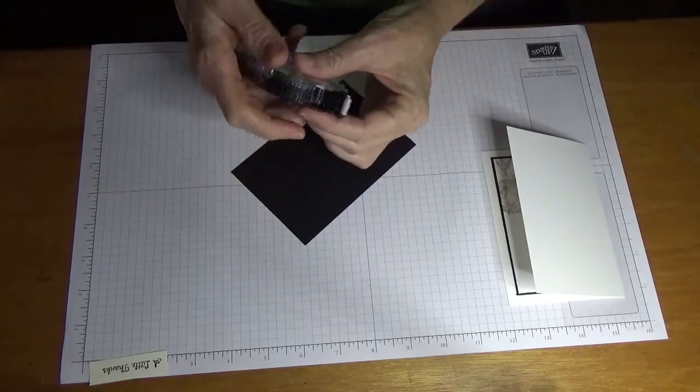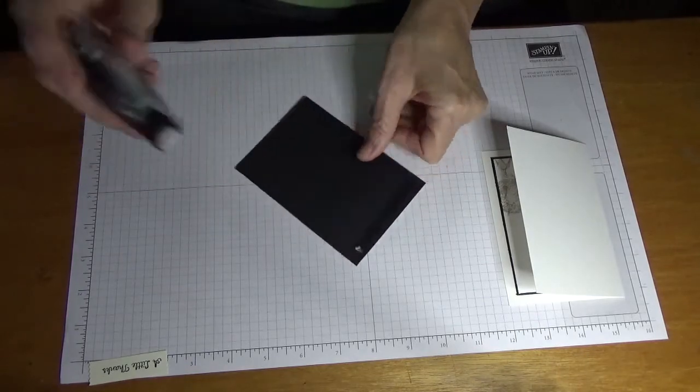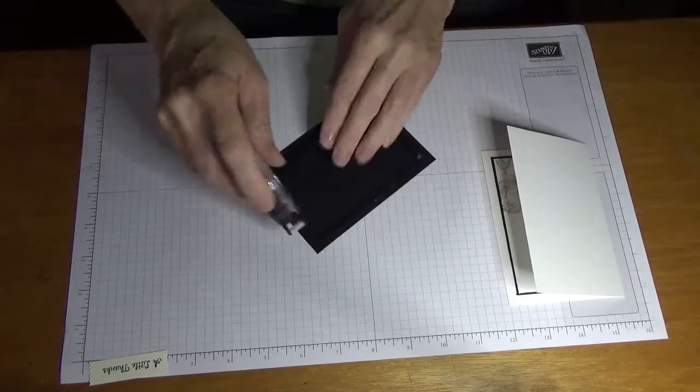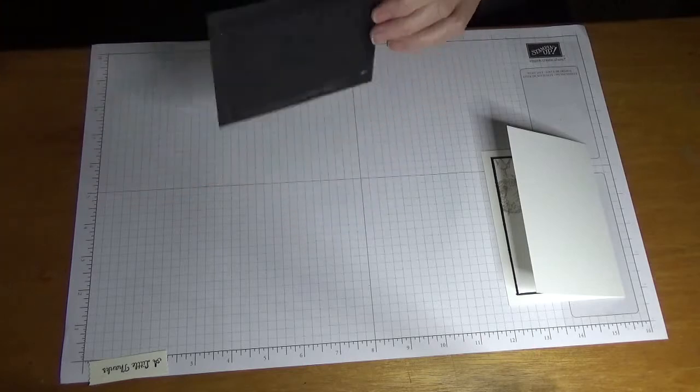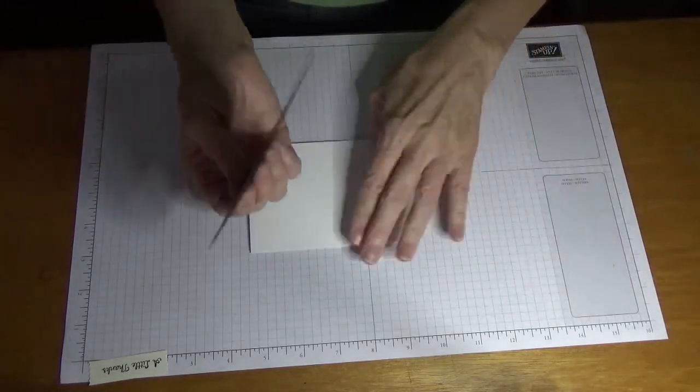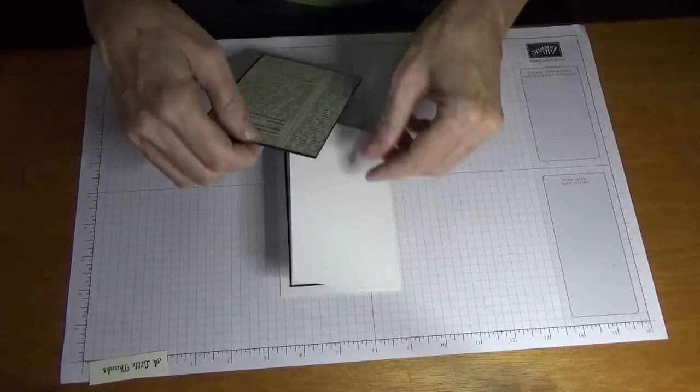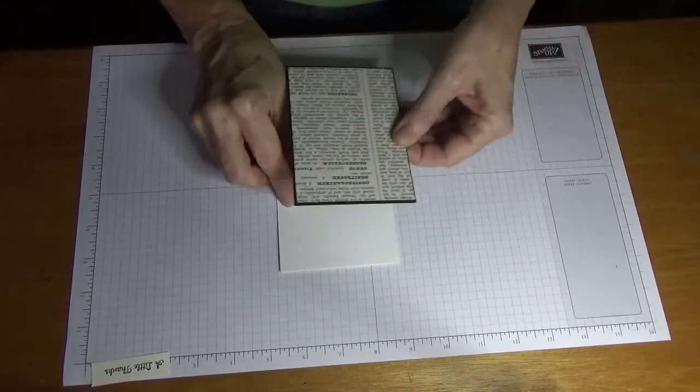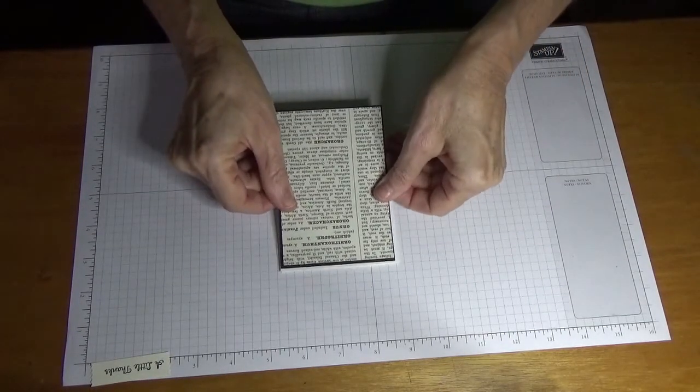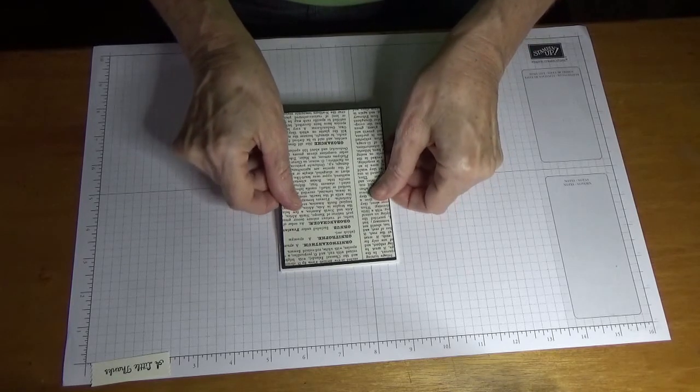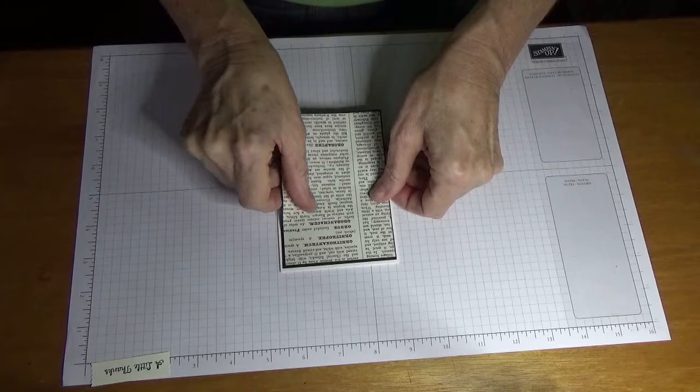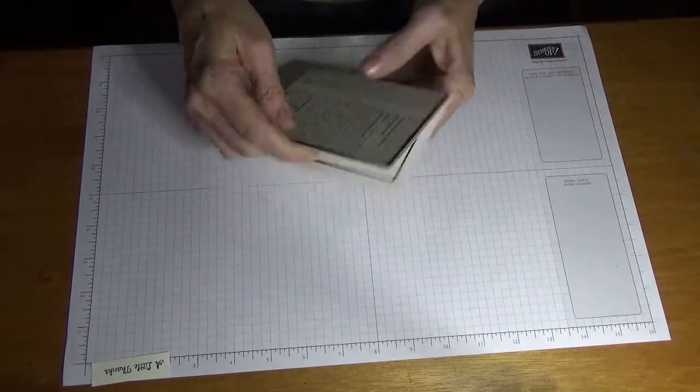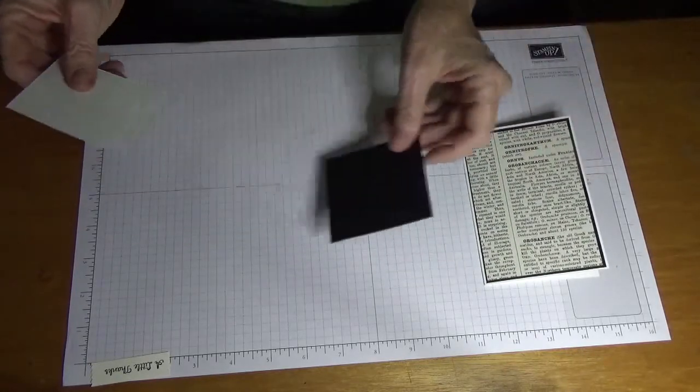Then we're going to just add some Snail, and as I say, if you cut all your pieces out for your note card all at once, it's just so easy. It didn't take me very long at all to make the note cards that I showed you previously, and I thought I'll just keep this last one and show you on camera. And then that just goes down on there like so.